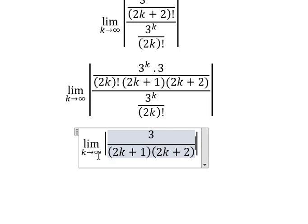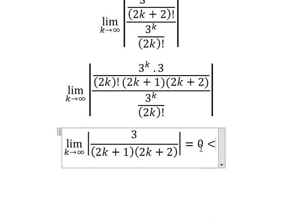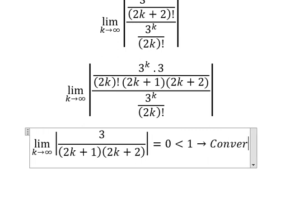So when k approaches positive infinity, this one will go to positive infinity, number 3 divided by this one. You got number zero. Number zero is smaller than number one, and we can say that is about convergence.